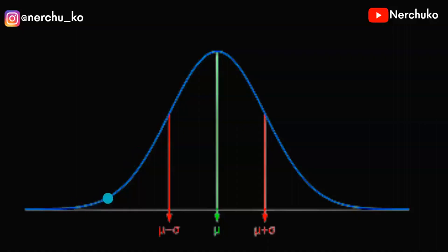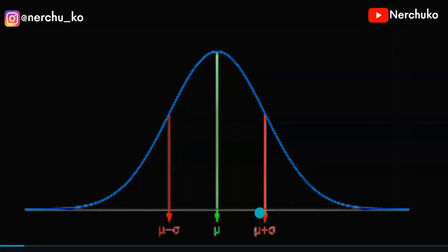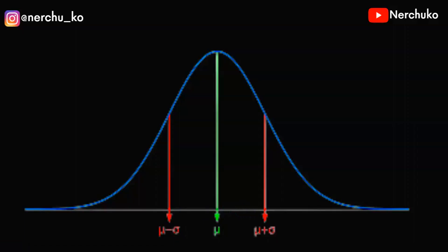The center of the x-axis is the mean value. The left side is mu minus sigma and the right side is mu plus sigma. That means sigma represents standard deviation — one step to the right is one standard deviation, and one step to the left is one standard deviation. There is a reason for this interval: the 99-95-68 rule.